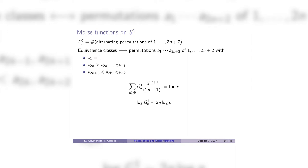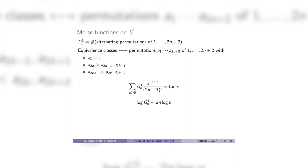Now let me mention a second notion of equivalence — topological equivalence — introduced by Liviu Nicolescu at the same time as he began studying Arnold's notion. For topological equivalence, instead of looking at level sets I'm going to look at sublevel sets. Given a real number t, I look at the set of points on the manifold whose function value is less than or equal to t. As t moves through the reals, this collection of sublevel sets evolves — starting from the empty set and working up eventually to the entire manifold.